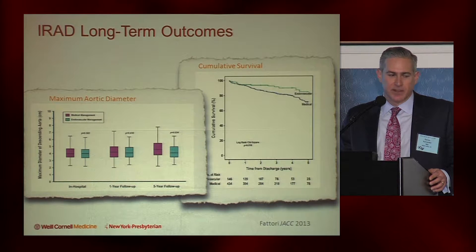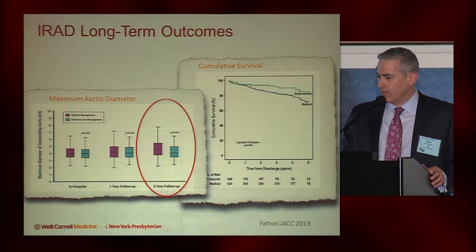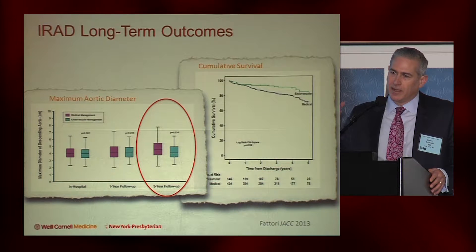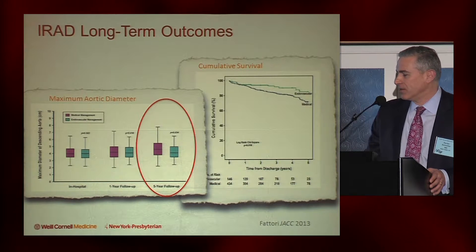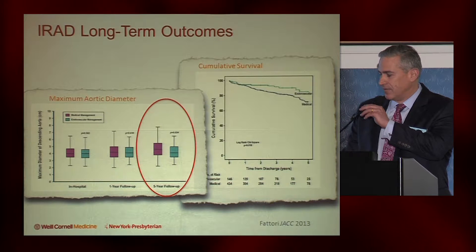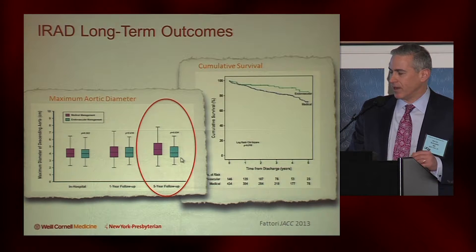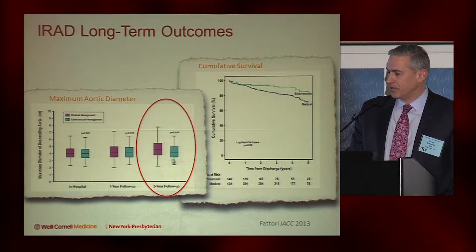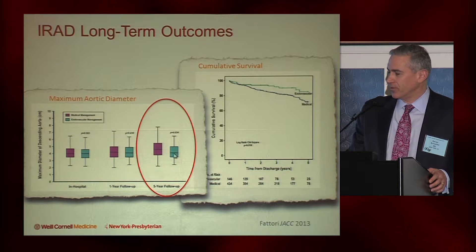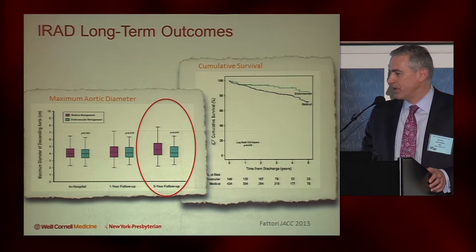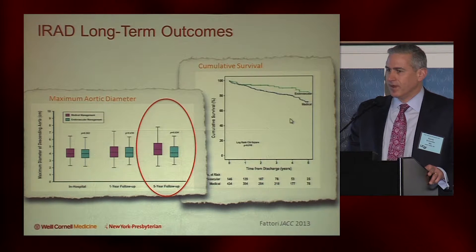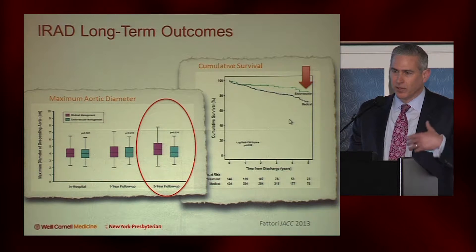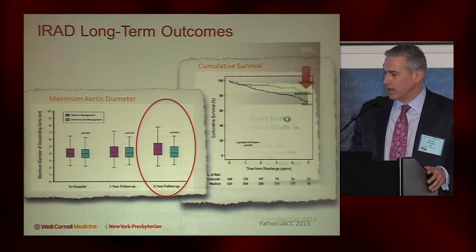Looking at IRAD data with longer follow-up, it appears that at the longer time point — from two years out to five years — there may be some benefit to endovascular therapy. They looked at prevention of progressive aortic enlargement; aortic diameter was smaller in patients treated with endovascular therapy. And it looks like late in the IRAD cohort there is some improved cumulative survival in the endovascular versus the medical group — because again, this is a chronic disease.